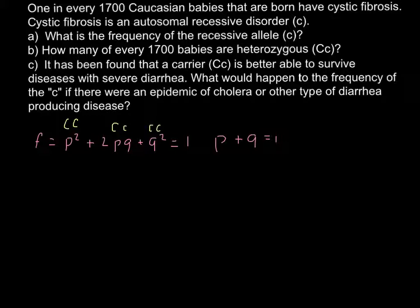p alleles stand for capital C, the dominant allele, and q stands for small c, the recessive allele. We also know that in this formula, 1 equals 100%. This is all we need to know to solve this problem.